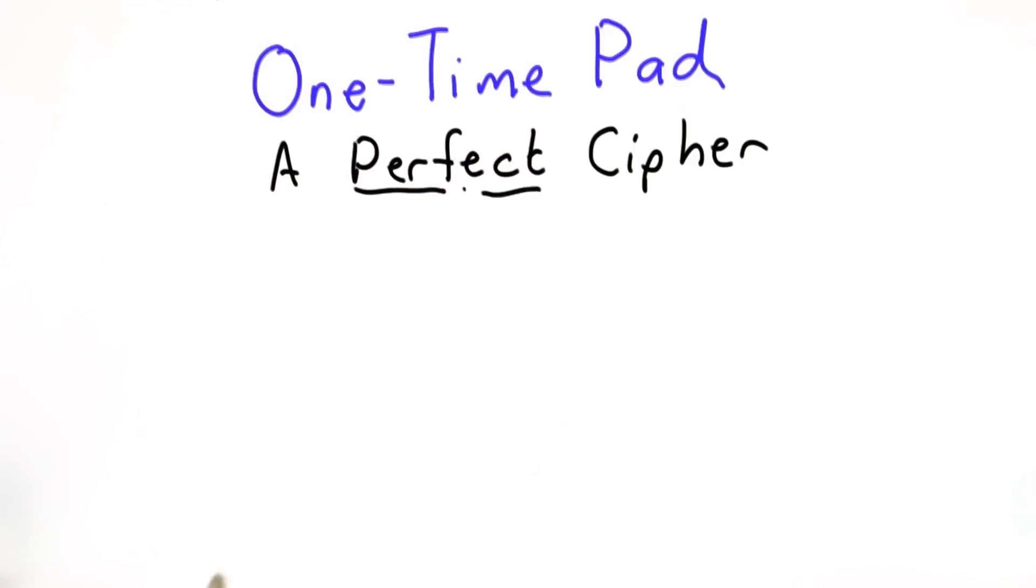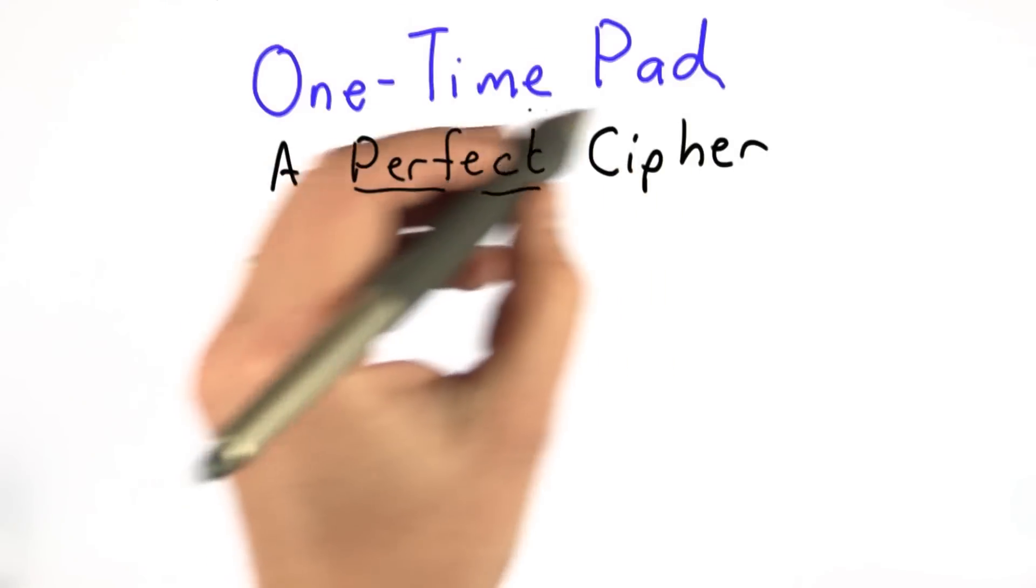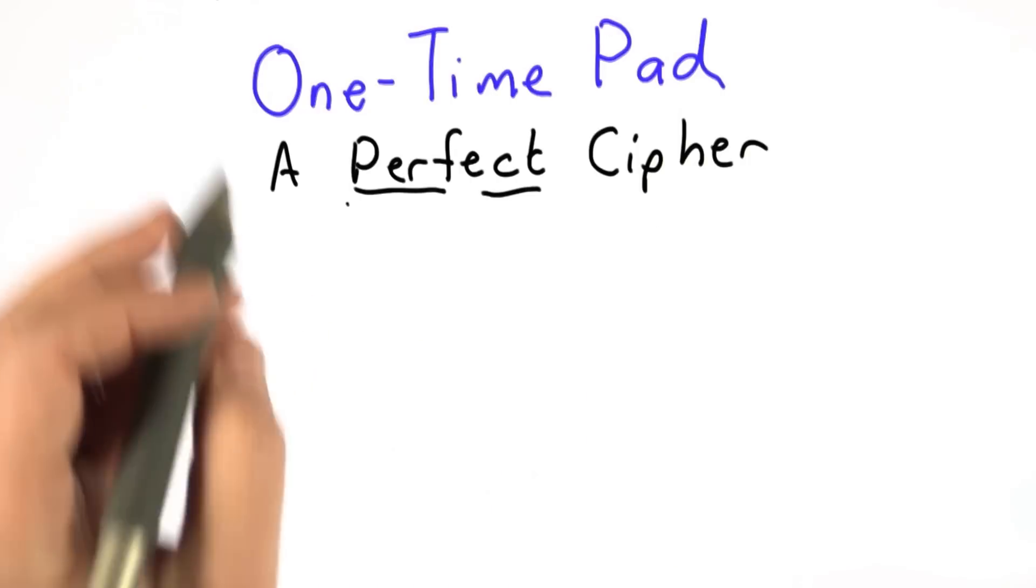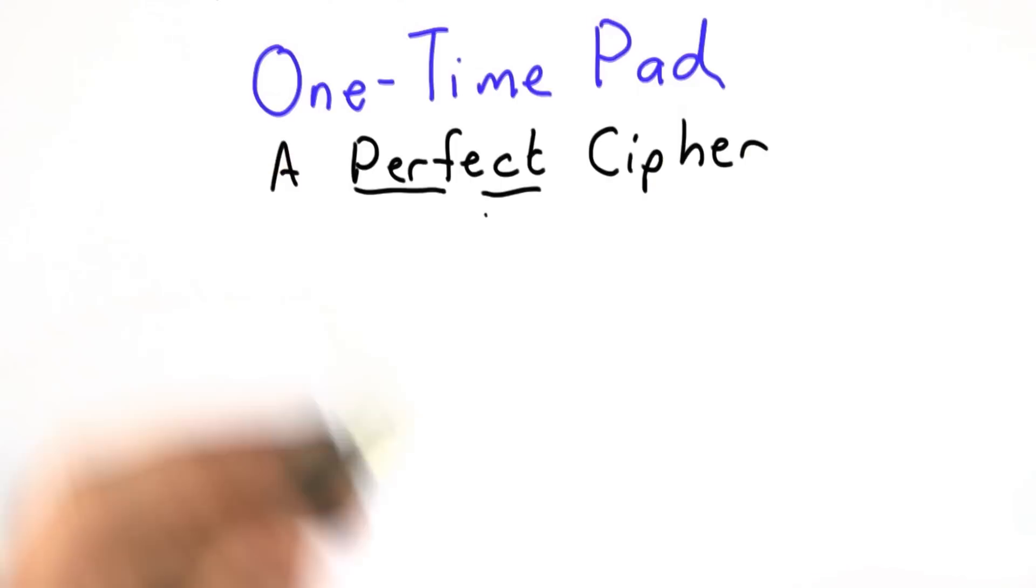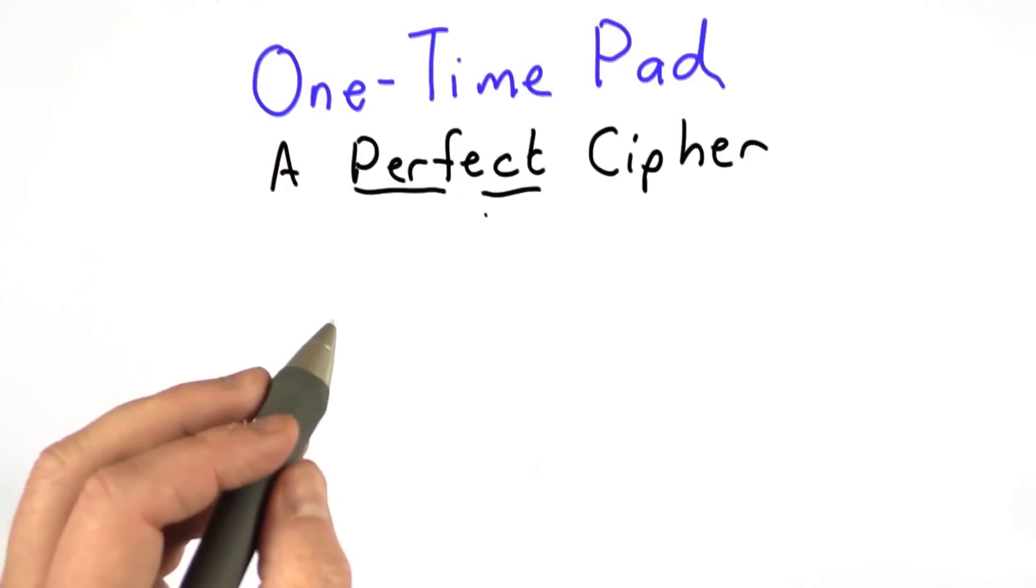I'm going to introduce a cipher called the one-time pad. This is actually a perfect cipher, and we'll define more precisely what that means. But it's a cipher that reveals no information at all about the key or the message.